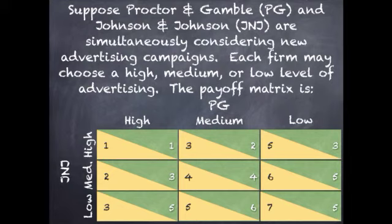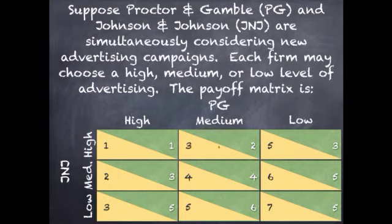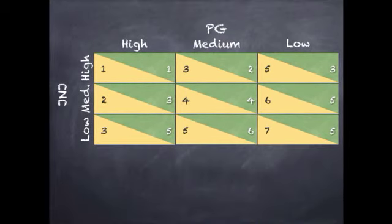For Johnson & Johnson, the lower triangles in yellow are what's important. For example, when J&J chooses high, their payoffs are one when P&G is high, three when P&G has a medium intensity strategy, and five when P&G has a low intensity advertising strategy. In green, we have Procter & Gamble's profits. The Q&A asks: what are each firm's best responses to each of its rival's strategies? Does either firm have a dominant strategy? And what is the Nash equilibrium? We're going to take a look at specific strategies to determine the best response for each one.